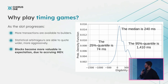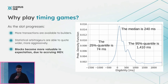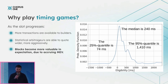Why play timing games? There's a dynamic where, as the slot progresses, more transactions hit builders, so they have a larger pool of transactions to build an optimal block. Secondly, statistical arbitrageurs are able to quote wider and more aggressively. If you were to arbitrage, say, Uniswap against Binance at the beginning of the block, you'd have to be more confident about what the price will be by settlement time than if you executed the arbitrage closer to the end of the slot.